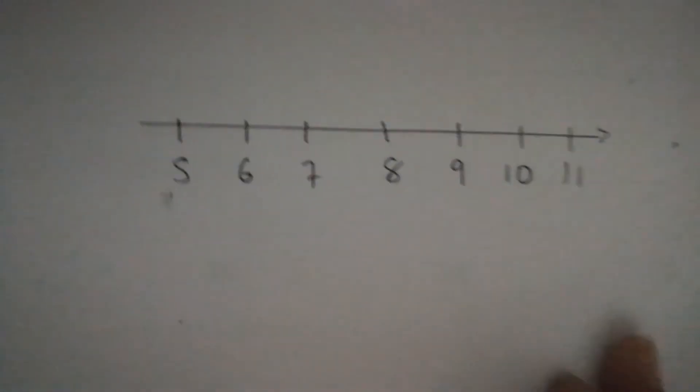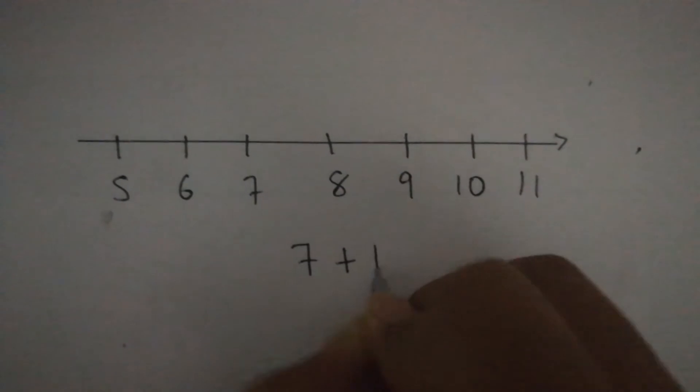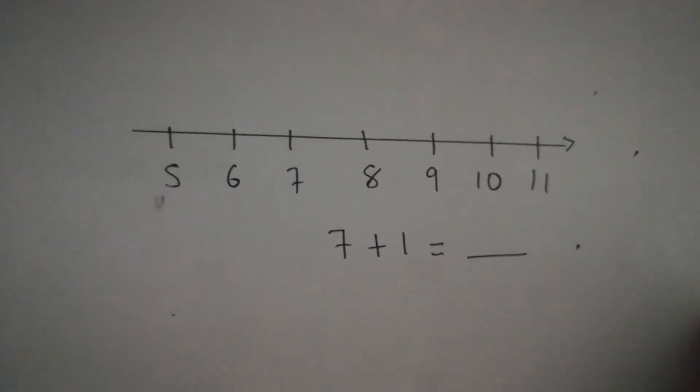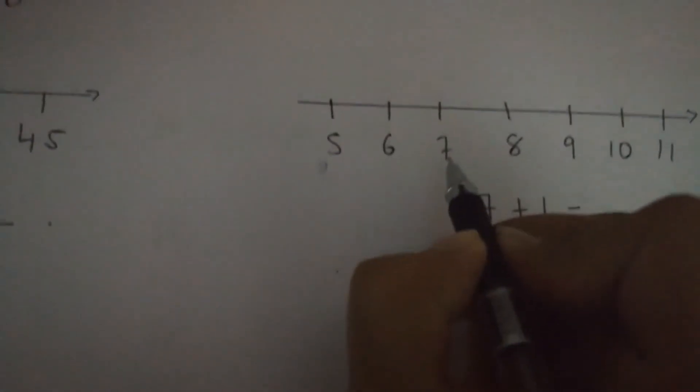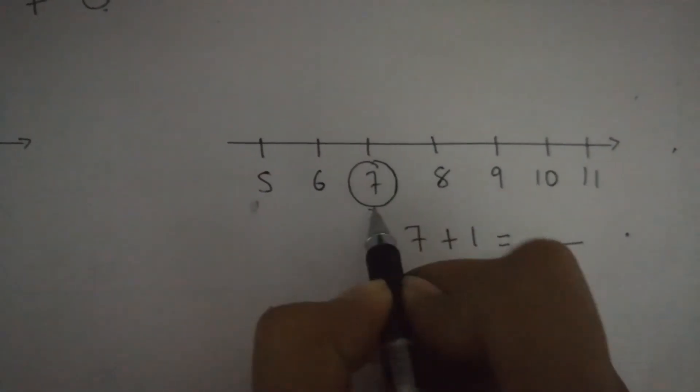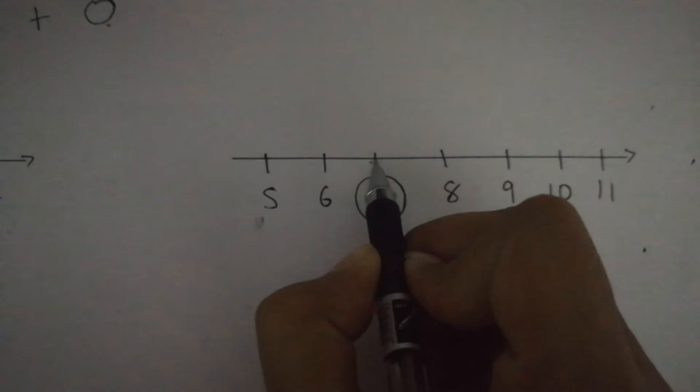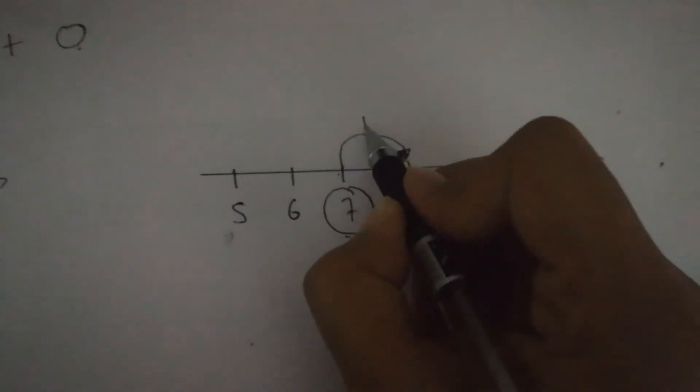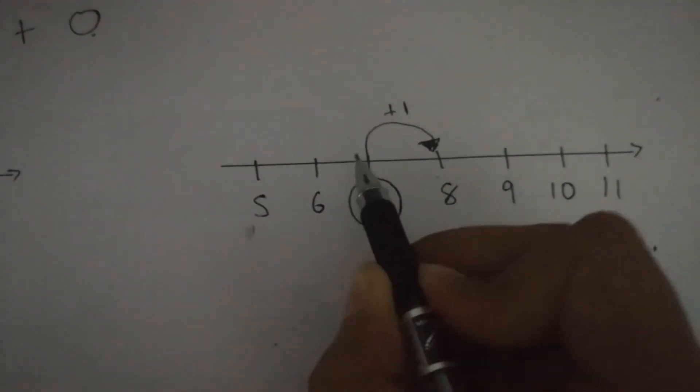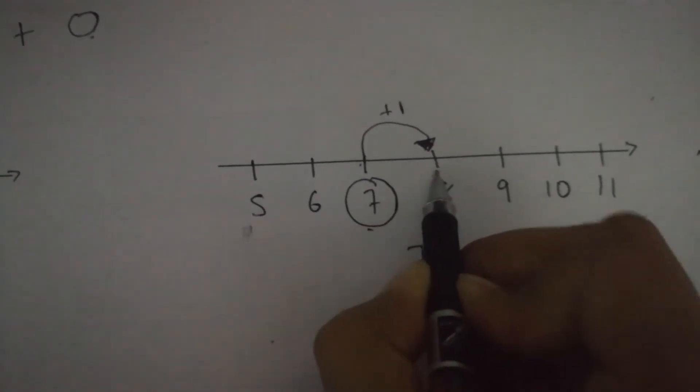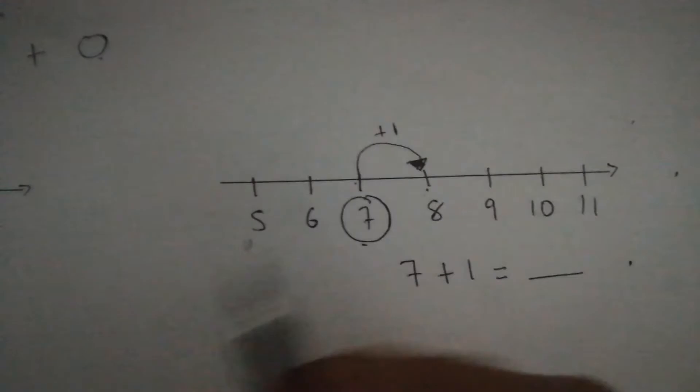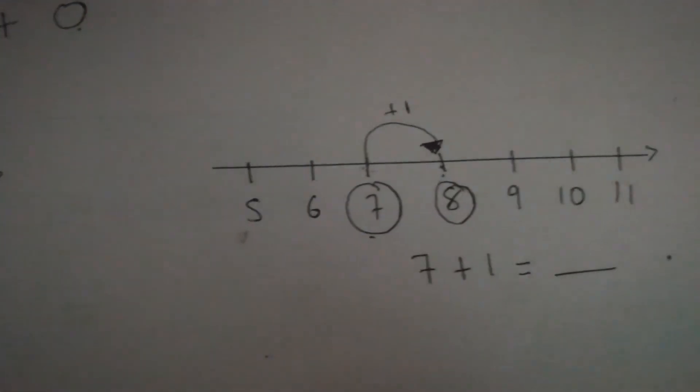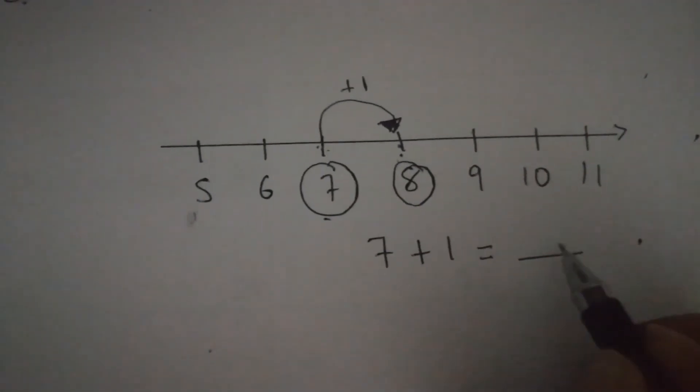Number line. We can count now. Well. We have five, six, seven, eight, nine, ten, eleven. Yes or no? We can't say five, seven, then eight. We're going to say five, six, seven, eight, nine, ten, eleven. This is a number line. Okay? We're going to use this to count. How? For example, I'm going to ask seven plus one. That gives me how much? How much is seven plus one? What are we going to do using a number line?